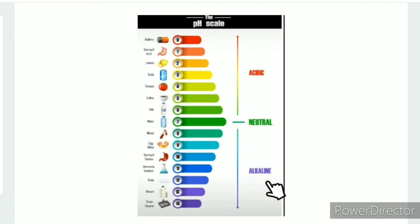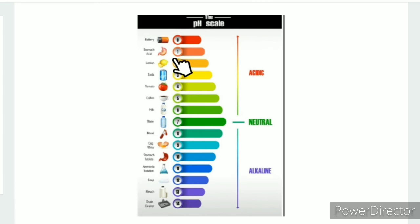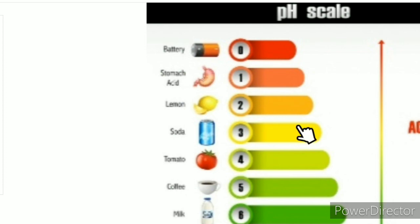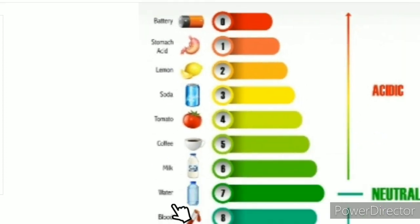Both acid and base sides are used from the scale. Water is neutral. pH less than 7 means the solution is acidic. Examples of acidic substances: stomach acid, lemon, soda, tomato, coffee, milk, and water. As acidity increases, the pH number is less than 7.